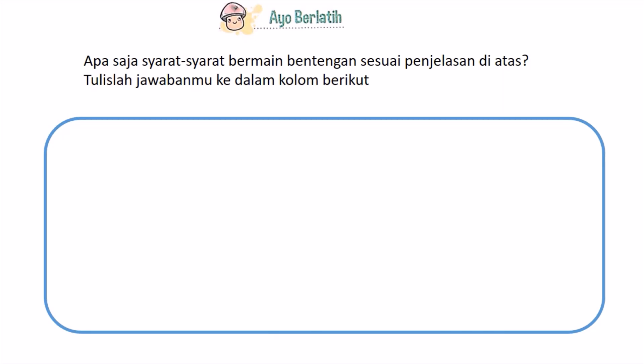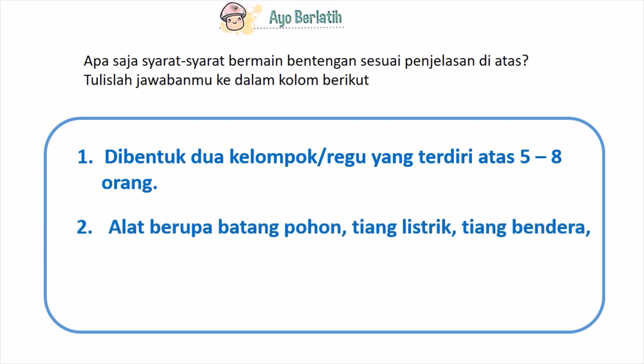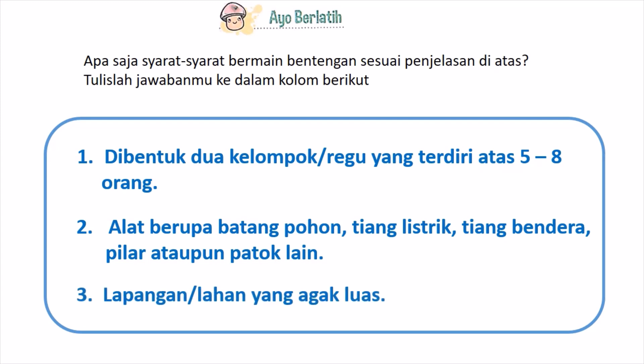Ayo berlatih! Apa saja syarat-syarat bermain bentengan? Sesuai penjelasan di atas, tulislah jawabannya ke dalam kolom berikut. Satu: dibentuk dua kelompok atau regu yang terdiri atas lima sampai delapan orang. Dua: alat berupa batang pohon, tiang listrik, tiang bendera, pilar, ataupun patok lain. Tiga: lapangan atau lahan yang agak luas. Itulah tiga syarat untuk bermain bentengan.